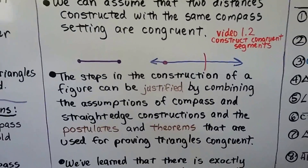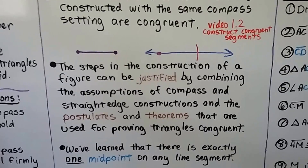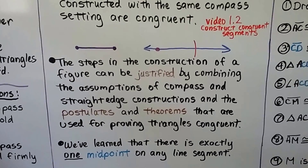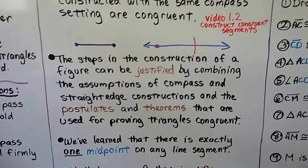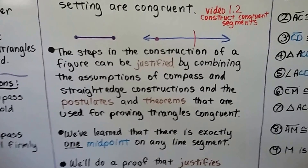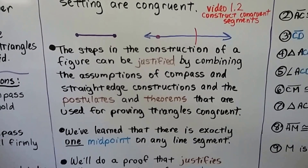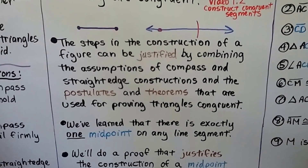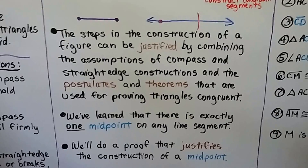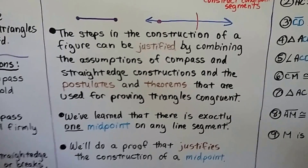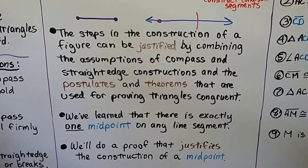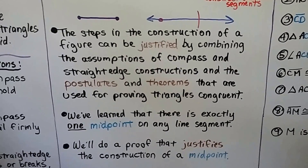The steps in the construction of a figure can be justified by combining the assumptions of compass and straight edge constructions with the postulates and theorems used for proving triangles congruent. We've learned there is exactly one midpoint on any line segment, and we'll do a proof that justifies the construction of a midpoint.